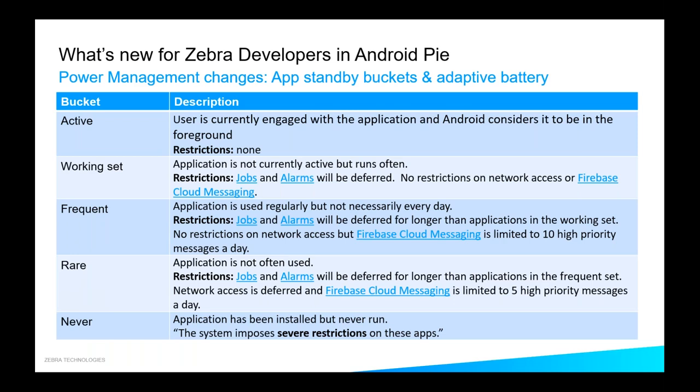The buckets are as follows. When you are assigned to the active bucket, you have no restrictions — you are in the foreground. If you're in the working set, this is essentially how you worked under Oreo. If you're using the jobs or alarms API, they're going to be deferred to that maintenance window first introduced in Doze mode, though there are no restrictions on network access or the ability to receive high priority Firebase Cloud messages. The concerning changes are the new frequent and rare buckets. Many of our customers are now embracing Firebase Cloud Messaging as the de facto standard for delivering asynchronous messages, and all of a sudden this is limited to only delivering 10 or 5 high priority messages a day in those buckets.